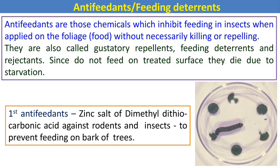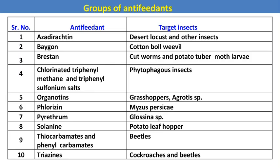Next are antifeedants or feeding deterrents. Antifeedants are chemicals which inhibit feeding in insects when applied on foliage without necessarily killing or repelling them. They are also called gustatory repellents, feeding deterrents, and rejectants. Since insects do not feed on the treated surface, they die due to starvation. A notable example is azadirachtin, extracted from the neem tree, which is used as an antifeedant against locusts.